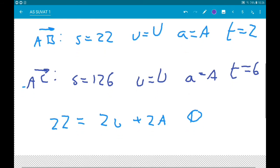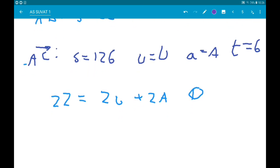And then for the next one, S is 126. Now that equals 6U add one-half A times 6 squared. 6 squared is 36, half of that is 18, so we get 18A. Let's call that number 2.